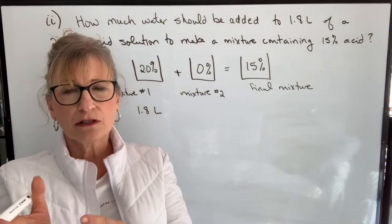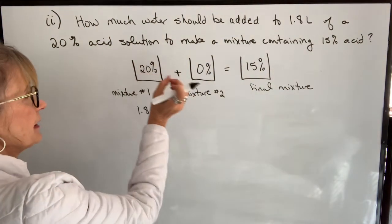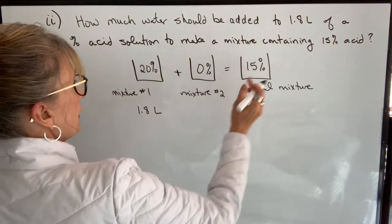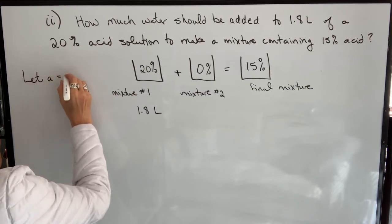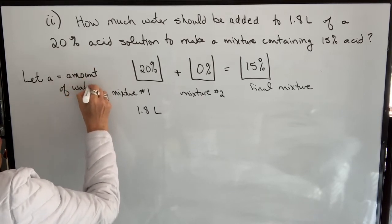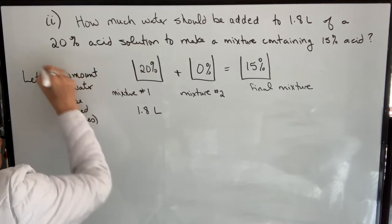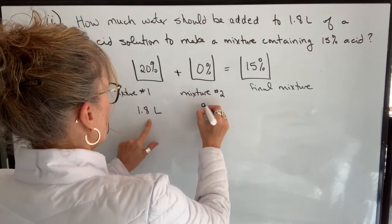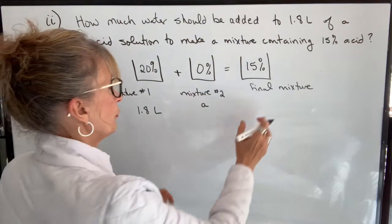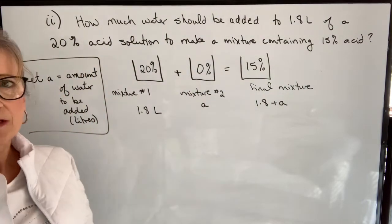If we're adding straight water, it's going to be 0% acid. You could also do the question using the water percentages — it would be 80%, 100%, and 85% — but either option works. Let A equal the amount of water to be added, in liters. We're going to add A liters of water at 0% acid, and we'll end up with 1.8 plus A liters in our final mixture.